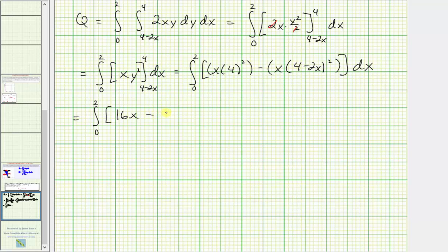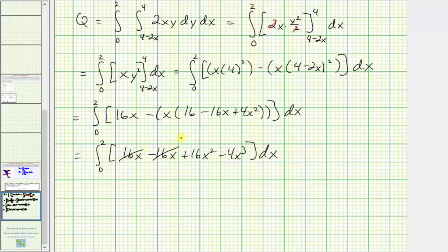So here we'll just have 16x. And here we're going to have minus x times, the quantity four minus two x squared is going to be 16 minus 16x plus four x squared. And now simplifying inside the parentheses, we have 16x, and then we're going to have minus 16x, and then we'll have plus 16x squared. And we'll see how here, 16x minus 16x would be zero.